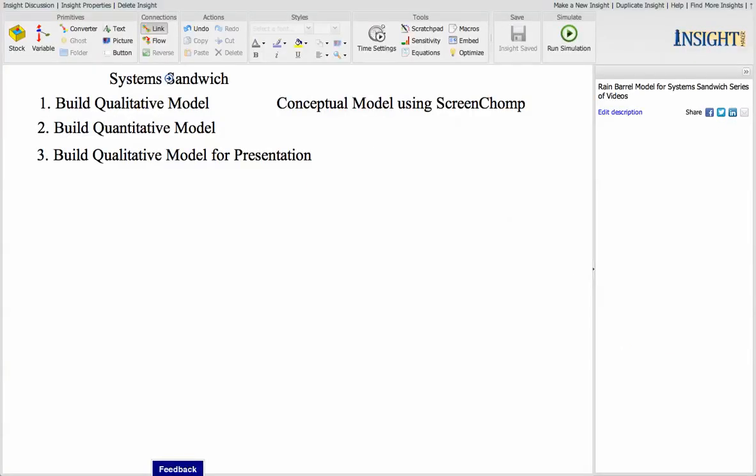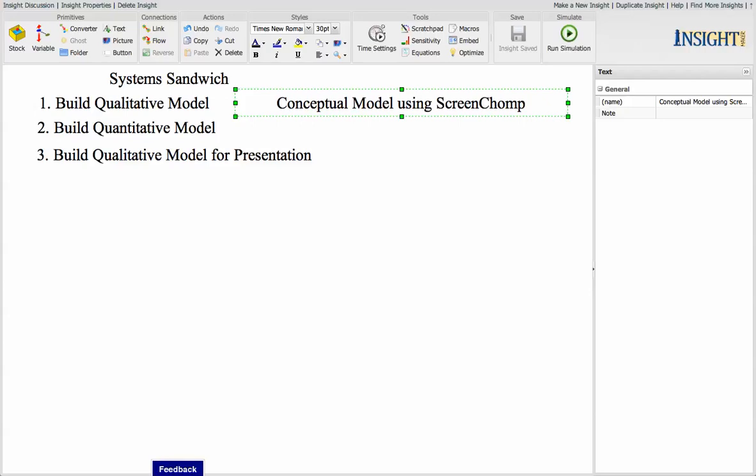So now we're going to start with our Systems Sandwich. First we're going to build the qualitative model and that's what we did with the conceptual model. I used Screen Chomp on my iPad to do that in case you're interested, just a little drawing program.